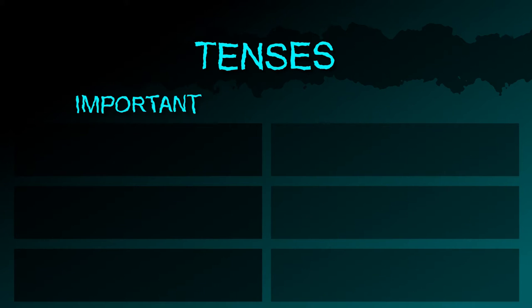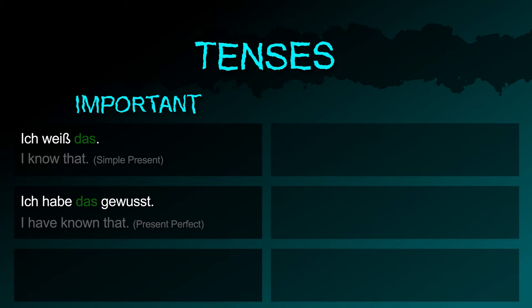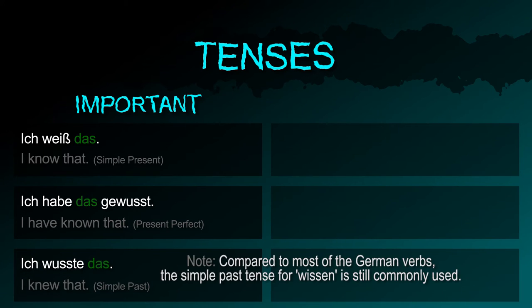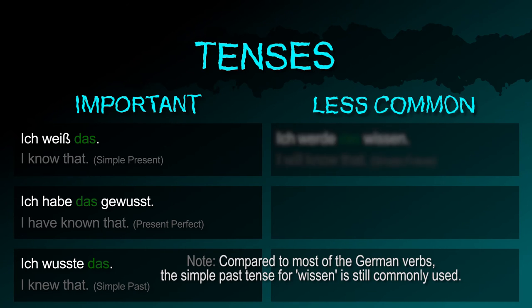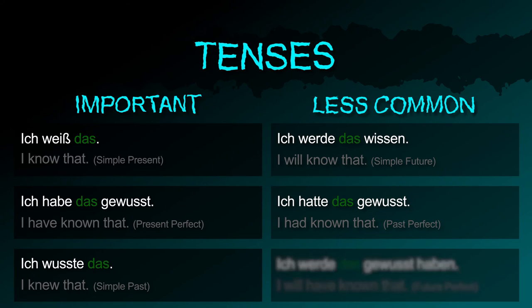Important tenses: ich weiß das (present); ich habe das gewusst (present perfect); ich wusste das (simple past). Less common tenses: ich werde das wissen (future I); ich hatte das gewusst (pluperfect); ich werde das gewusst haben (future II).